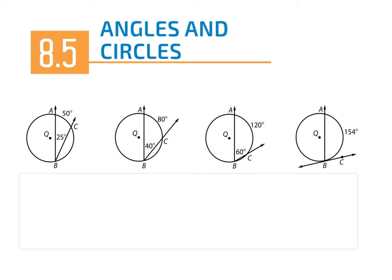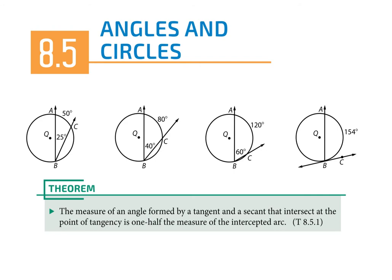In the last section, we saw that an inscribed angle is exactly half of the arc that it cuts. So if I have this angle here that's 25 degrees, then the arc created by that angle is going to be 50. It still works out that way. And so all of a sudden we no longer have an inscribed angle — the other ray that makes up the angle is on the outside, but even when that happens, you have half of the angle measure that creates it.